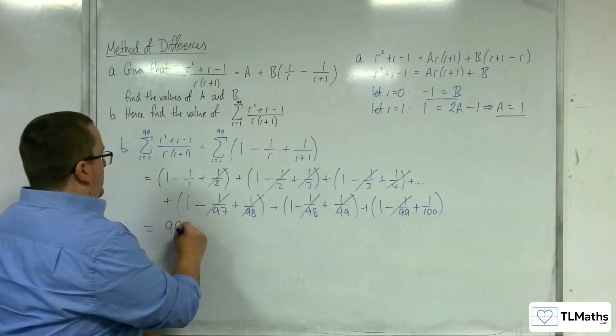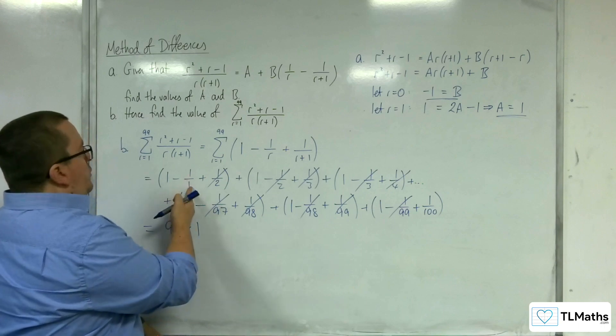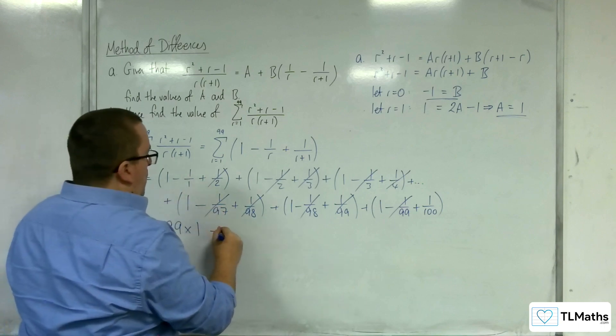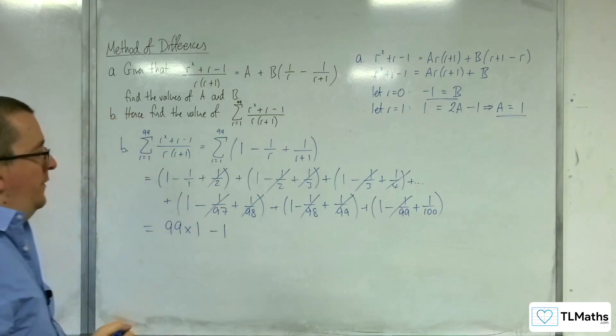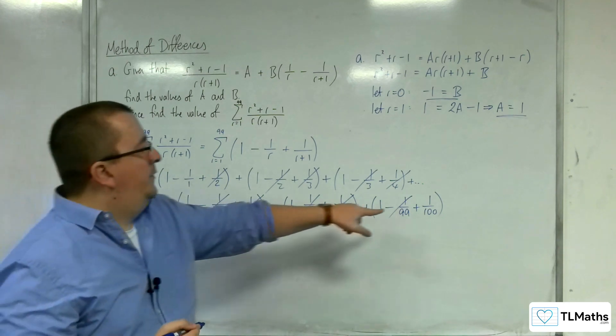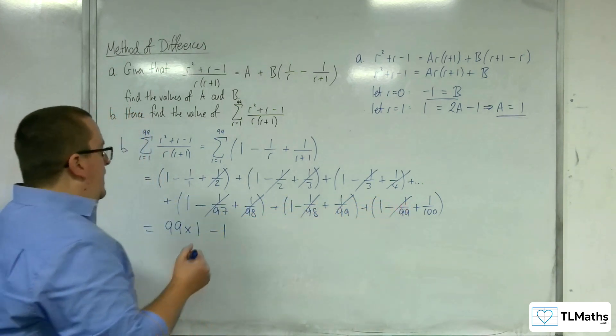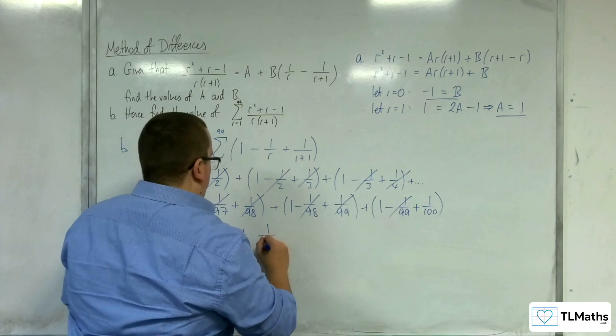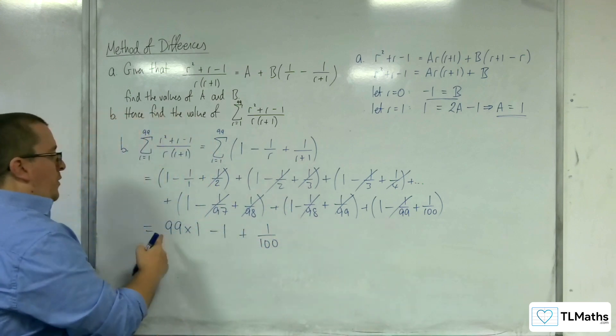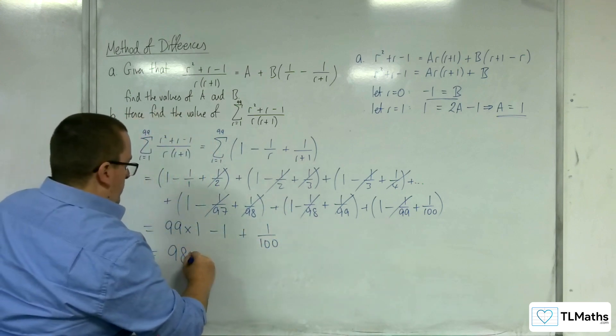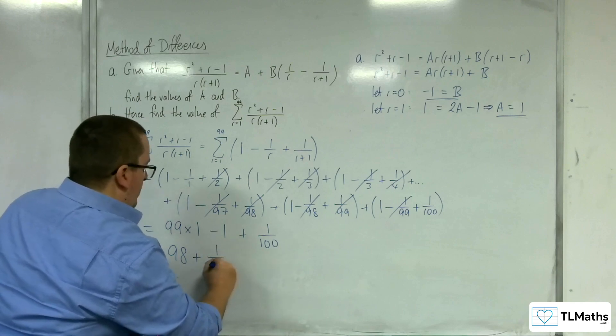So 99 times 1. I've got this take away 1 over 1, that's happening as well. Plus the 1 over 100 that is left on the end.